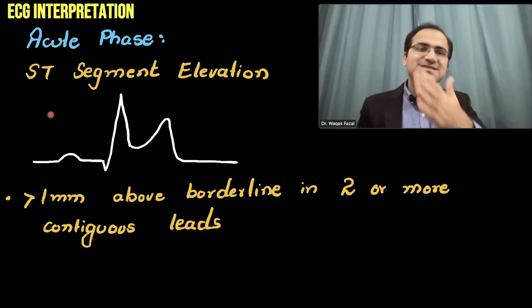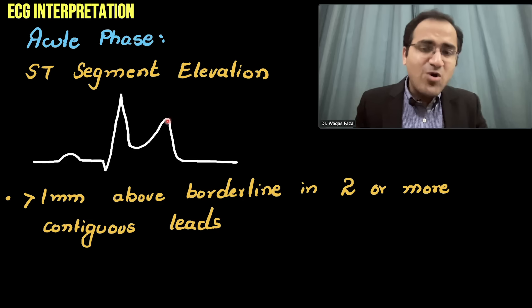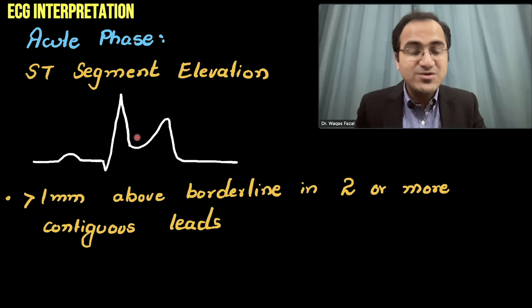As ischemia progresses, the hyper-acute phase converts to the acute phase. In the acute phase, there is ST segment elevation — the T wave was already tall, and now the ST segment is also rising upward. That is the acute phase: ST segment elevation with a tall T wave.